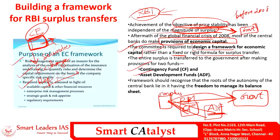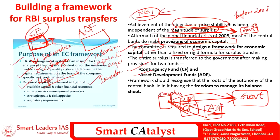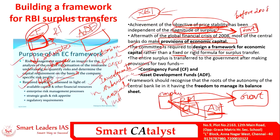The Asset Development Fund (ADF) of RBI can be utilized in two situations: one is to meet interim or temporary capital expenditure, and the second is for making investments in subsidiaries and associate institutions of the RBI, which includes banks and other institutions. After both these funds are provided for, only the remaining surplus should be transferred to the government.